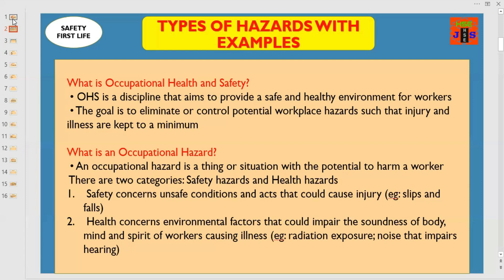Safety concerns unsafe conditions and acts that could cause injury — for example, slips and falls. Health concerns environmental factors that could impair the soundness of body, mind, and spirit of workers, causing illness — for example, radiation exposure and noise that impairs hearing.